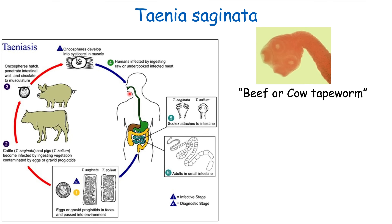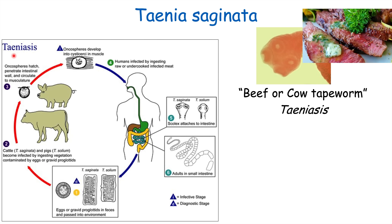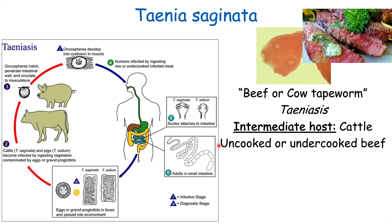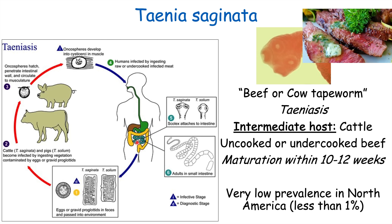This is often called the beef or cow tapeworm. Infection with Taenia saginata, like Taenia solium, leads to taeniasis. The intermediate host is cattle, and a patient gets this tapeworm from uncooked or undercooked beef. Maturation takes 10 to 12 weeks for cysticercae to become a mature adult tapeworm. This species has been nearly eradicated in North America due to improved sanitation, with less than 1% of the population likely having it.